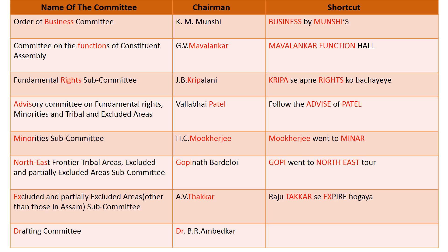The next committee is the Excluded and Partially Excluded Areas (other than those in Assam) Subcommittee. Its chairman is A.V. Thakkar. The shortcut is the sentence: 'Raju Thakkar se expire ho gaya.' Thakkar from A.V. Thakkar, and EX from excluded and partially excluded areas.